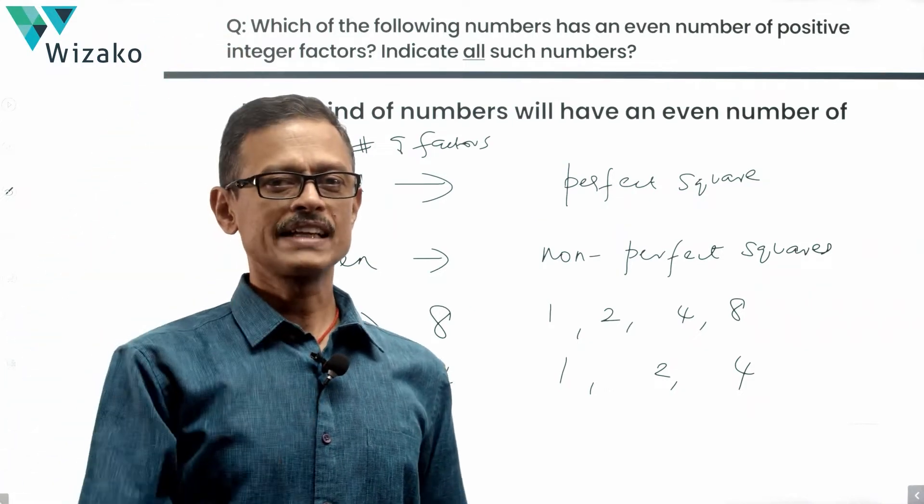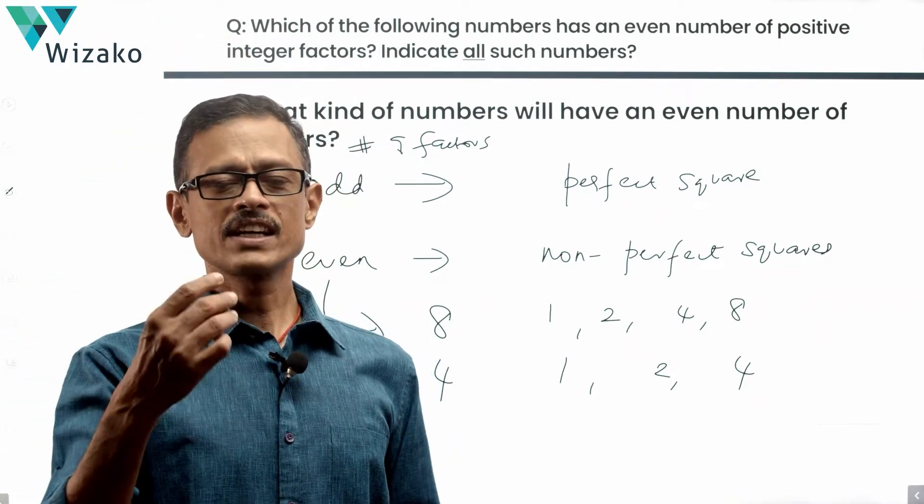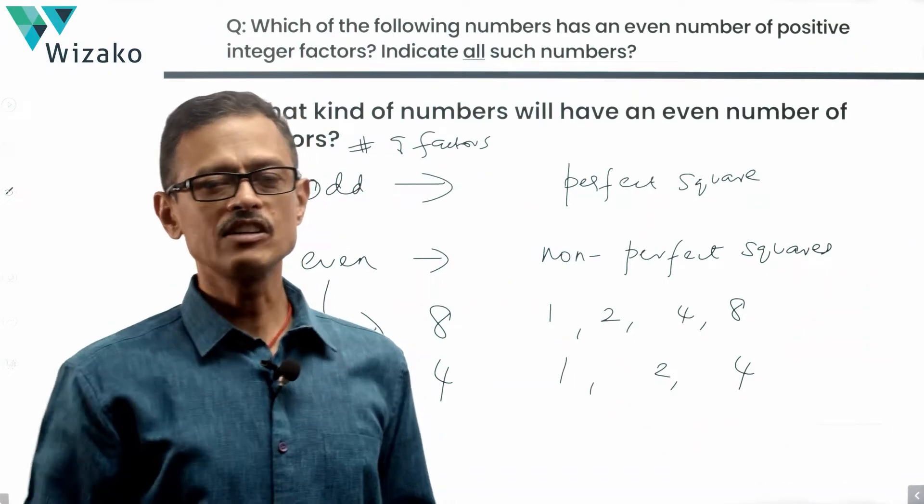So all I'm going to do is basically go to the next slide, list on the six answer options, check out which all numbers are not perfect squares. Those will have even number of factors.